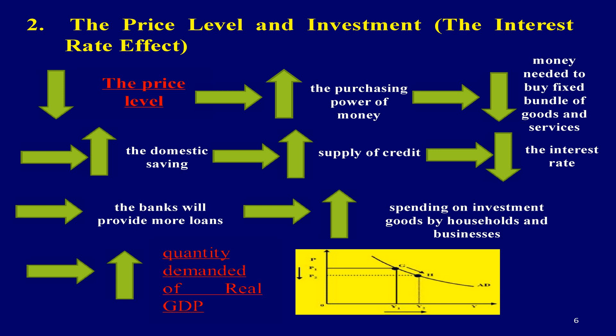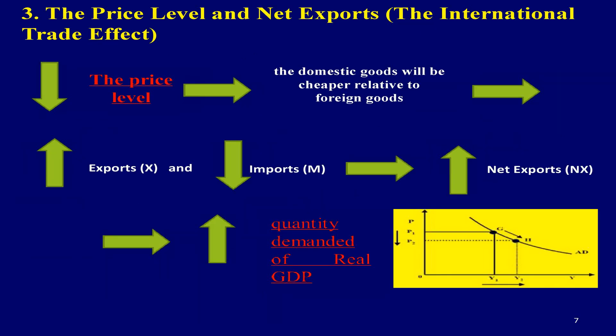The increase in investment goods means a larger quantity demanded of real GDP. The relationship between the price level and net exports explains the international trade effect. If the price level decreases in the domestic economy relative to foreign price levels, the domestic goods will be cheaper relative to foreign goods. This makes both the domestic economy and foreign countries buy more domestic goods. Therefore, imports will decrease and exports will increase. When imports decrease and exports increase, net exports will increase, meaning a larger quantity demanded of real GDP.